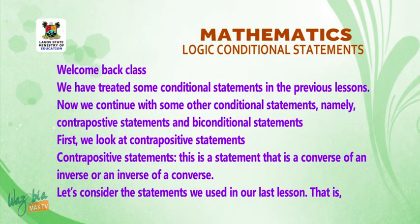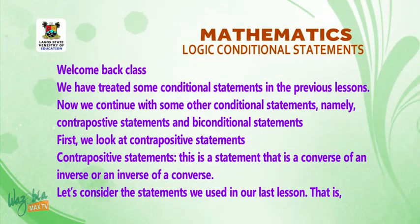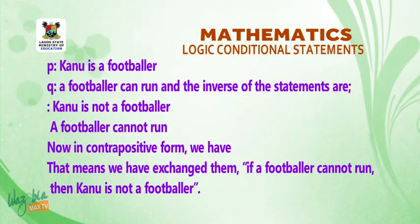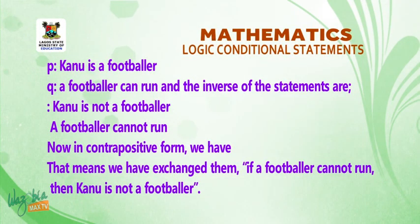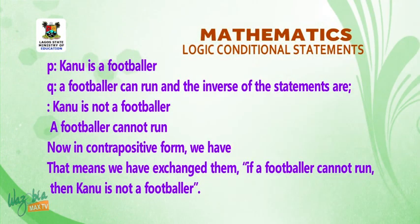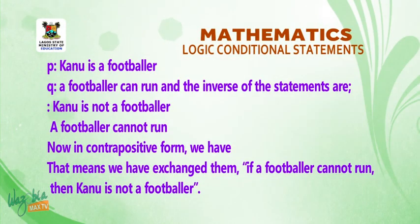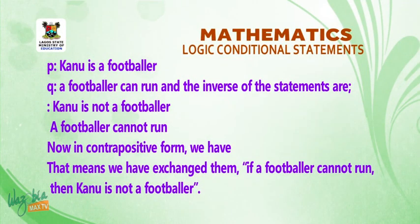Let's consider the statements we used in our last lesson. Statement p: Kano is a footballer. Statement q: a footballer can run. The inverse statements are negation p: Kano is not a footballer, and negation q: a footballer cannot run. In contrapositive form, we have negation q implies negation p.